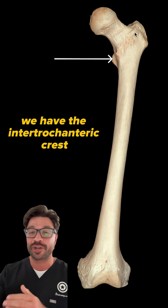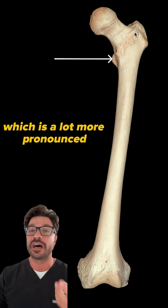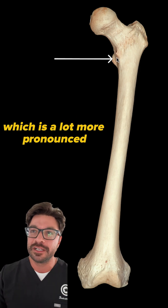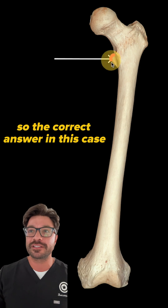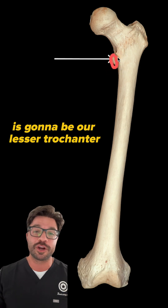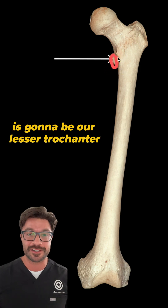We can also tell this is the intertrochanteric line because it is less pronounced. On the posterior aspect we have the intertrochanteric crest, which is a lot more pronounced. So the correct answer in this case is going to be our lesser trochanter.